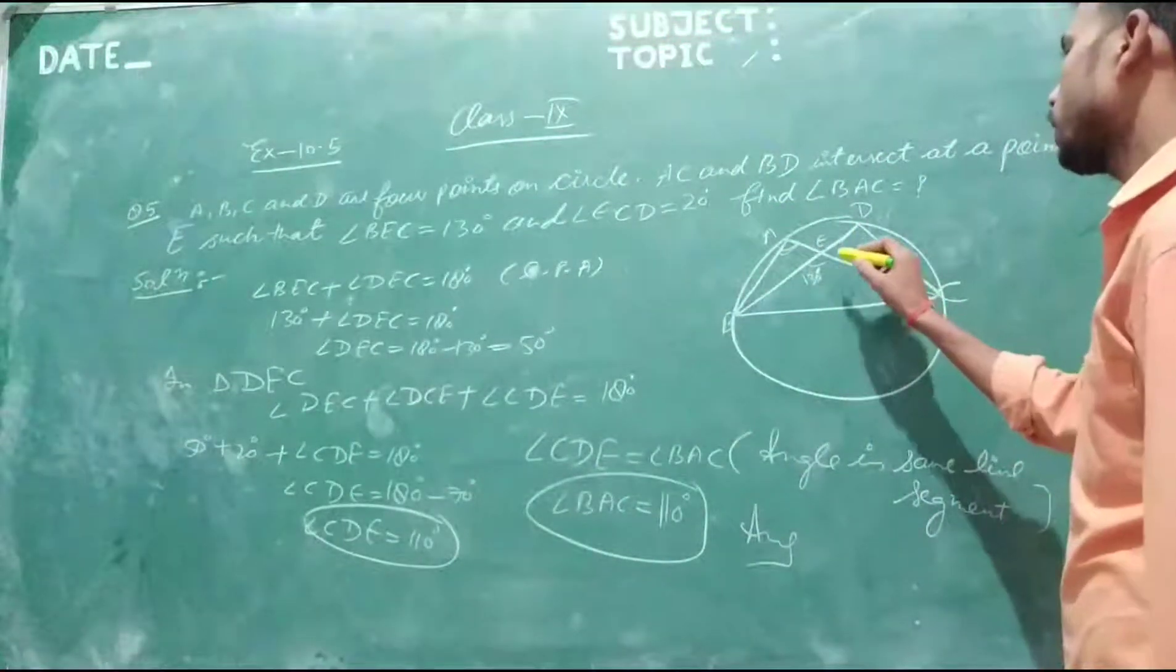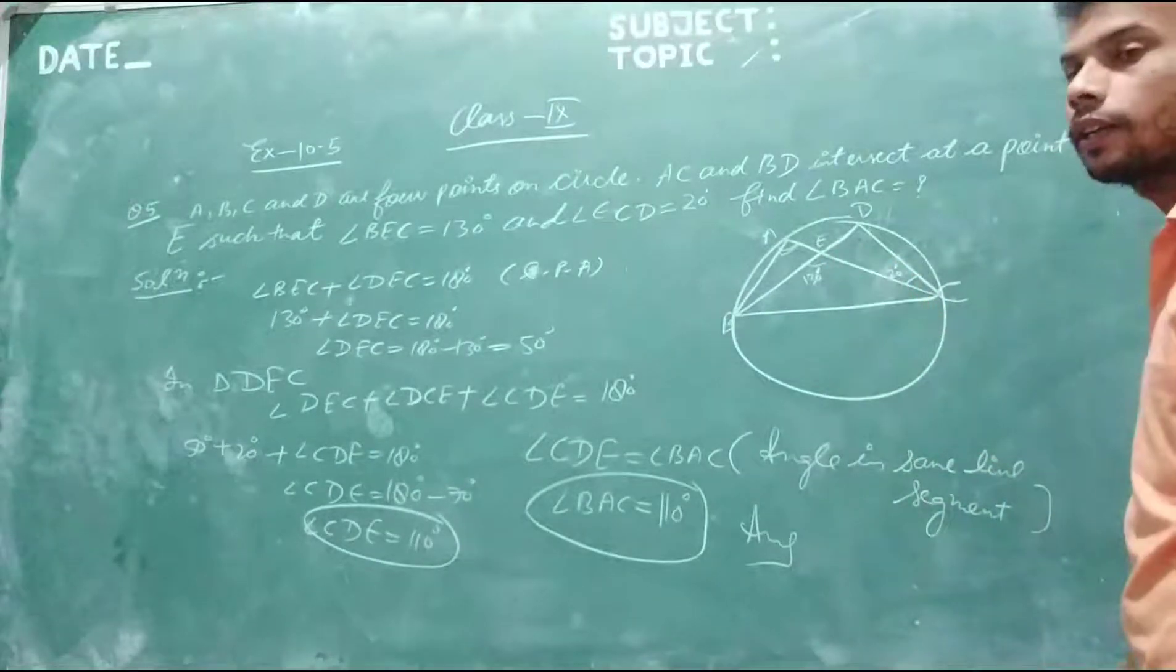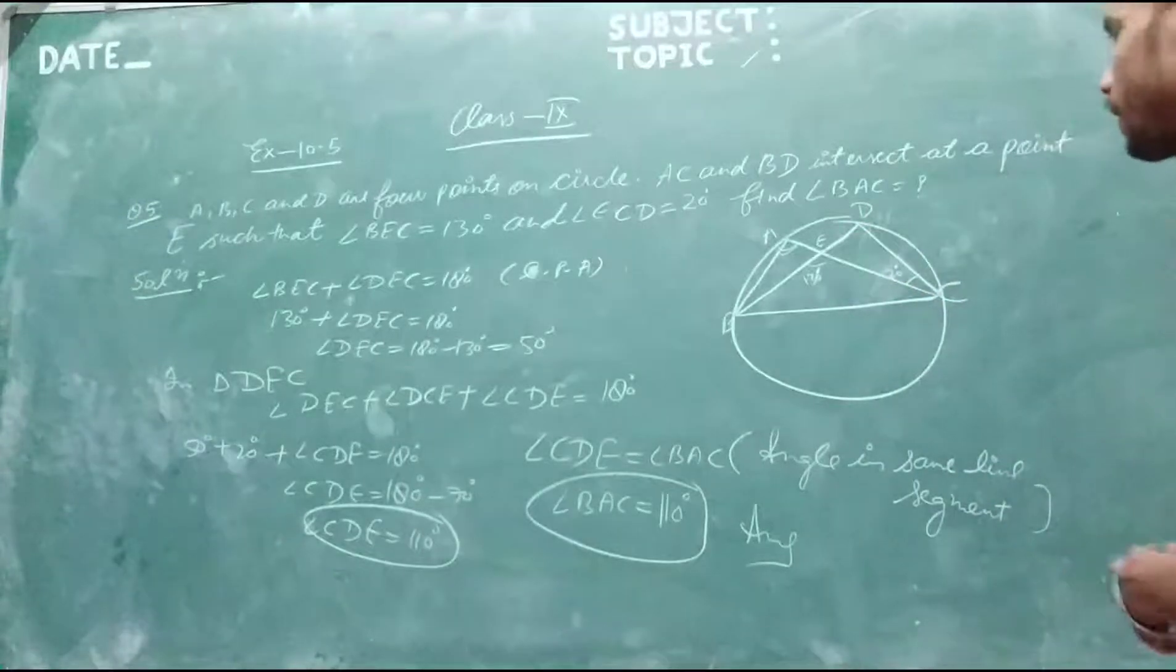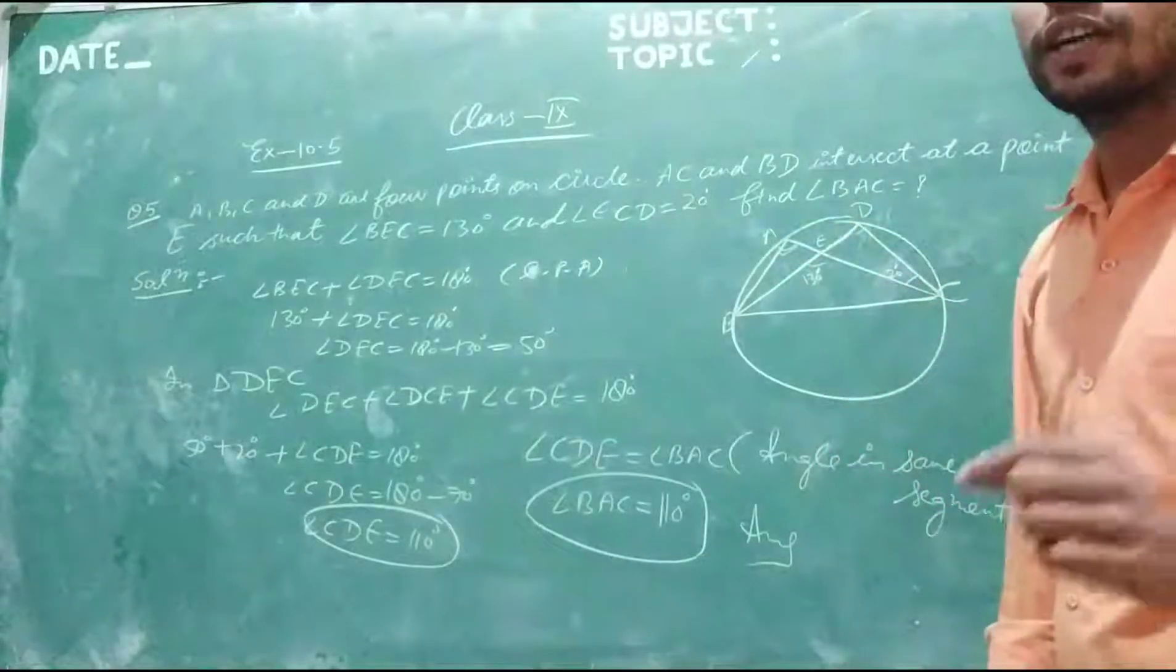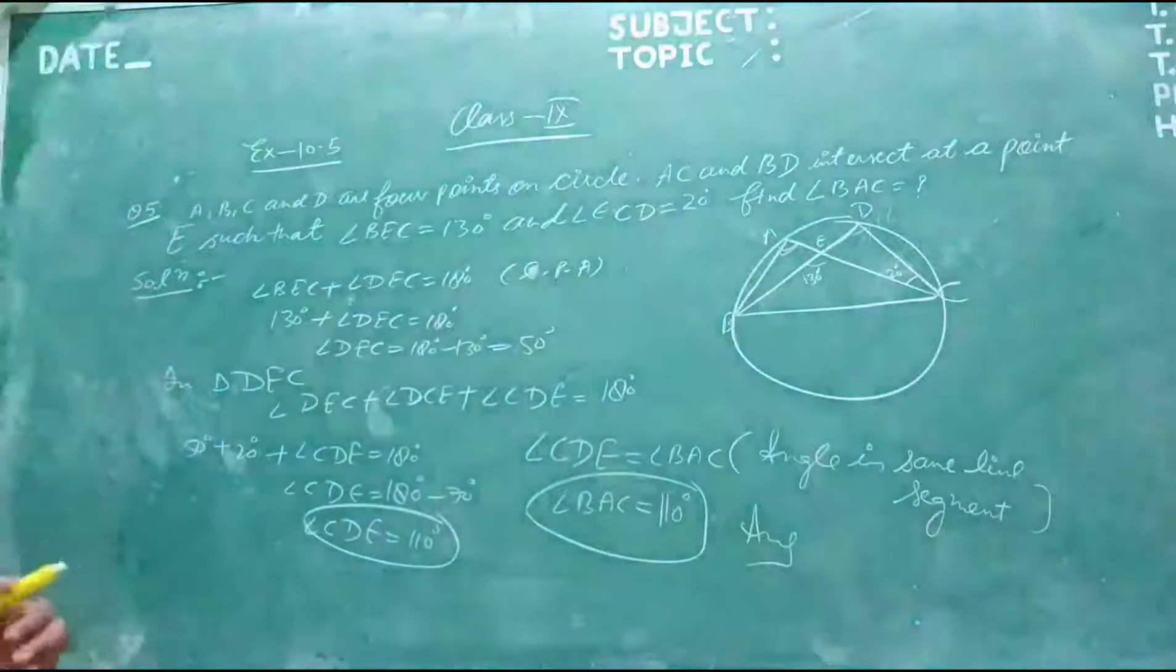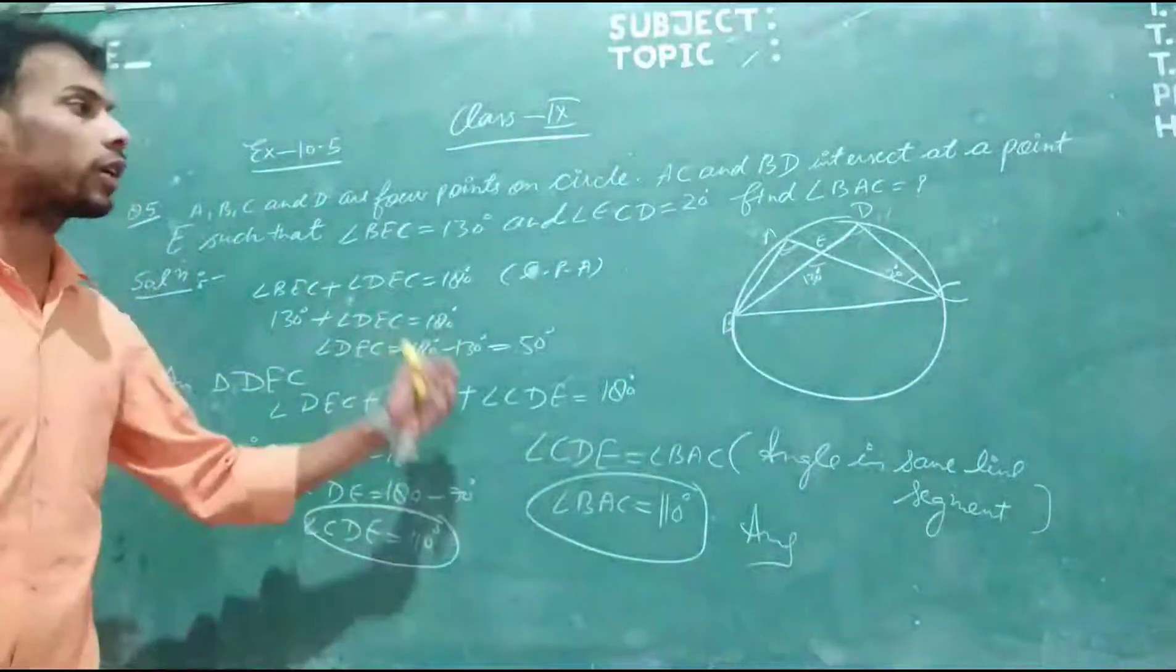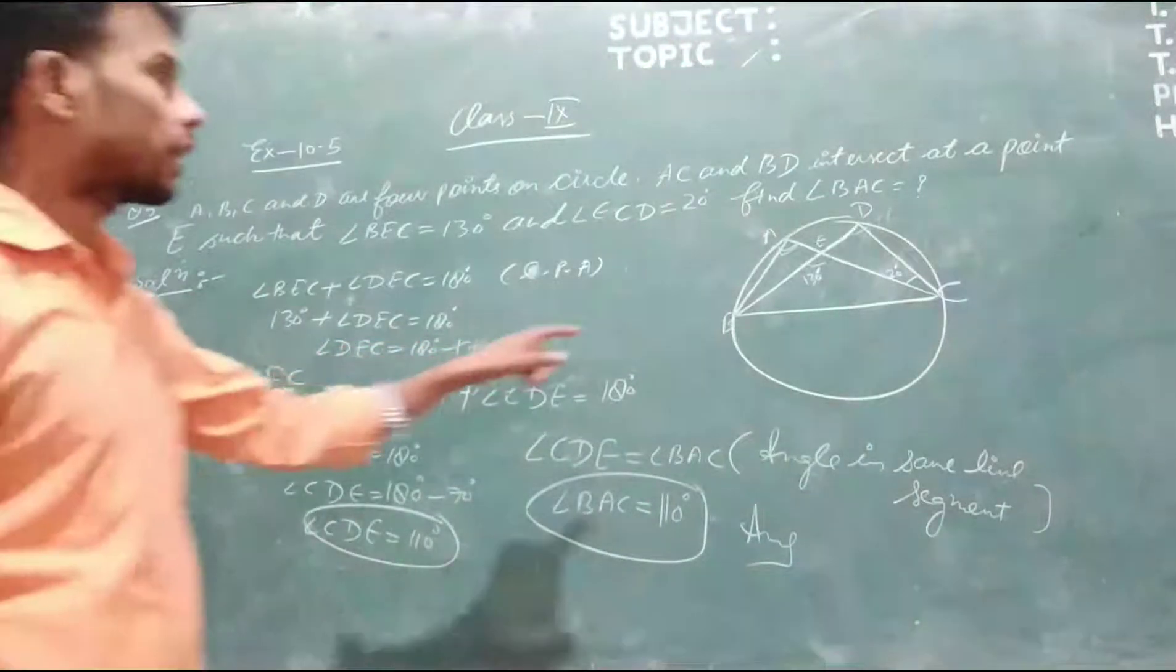First of all, we find out this angle. Angle BEC plus DEC equals 180. Why is that? Linear pair. BEC is 130.